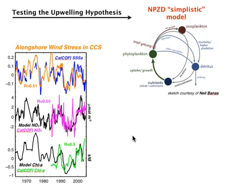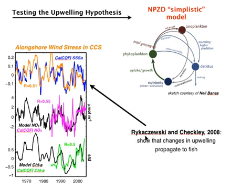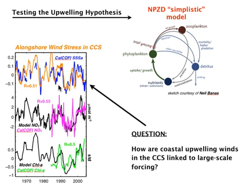A recent paper by Rykaczewski and Checkley showed that these changes in upwelling can also drive changes in fish, which would make a link from the NPZD all the way into the fish. Having established that these winds are important, let's ask: how are coastal upwelling winds in the CCS linked to large-scale forcing?